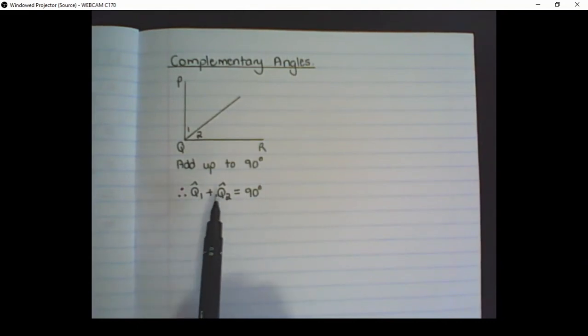Notice how we show angles in geometry. We put a little hat on the letter of the vertex where the angles or lines meet. So that refers to an angle, and Q1 is referring to that angle Q1 and Q2 is that angle Q2.